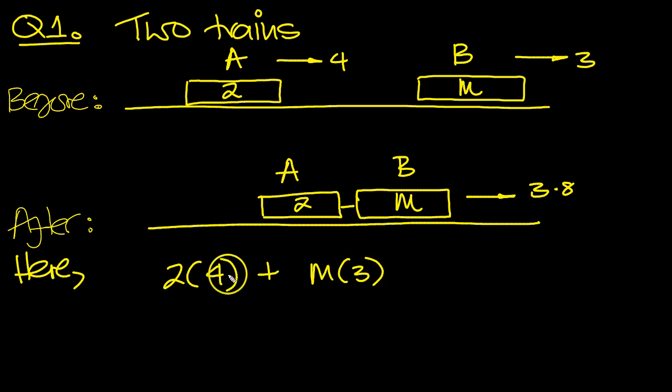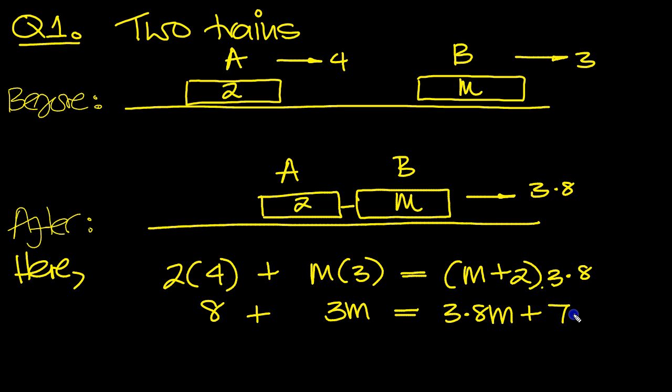MV plus MV is equal to, the total mass here is M plus 2, which moves with a speed of 3.8. So what have we got? 8 plus 3M then is equal to 3.8M, and we expand the bracket, plus 2 lots of 3.8 is 7.6.